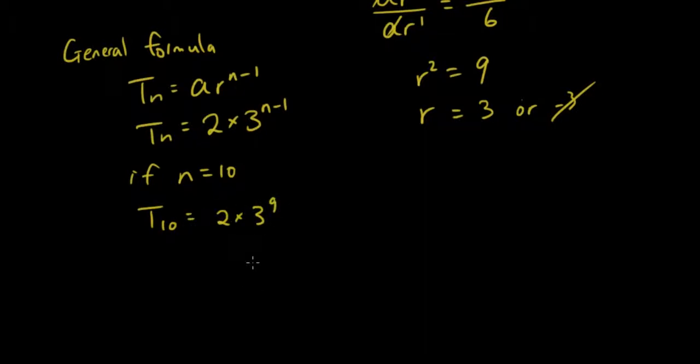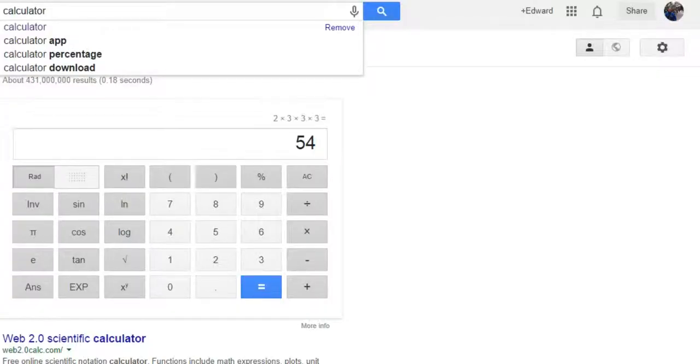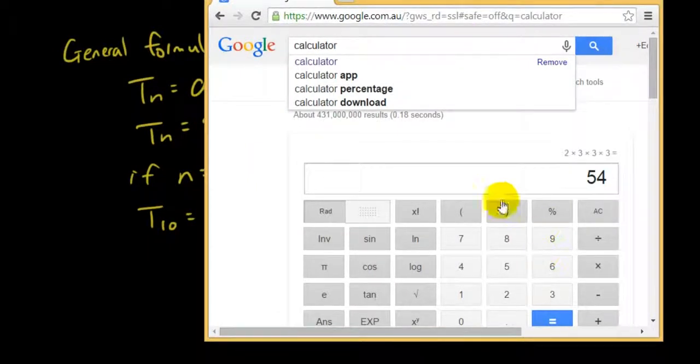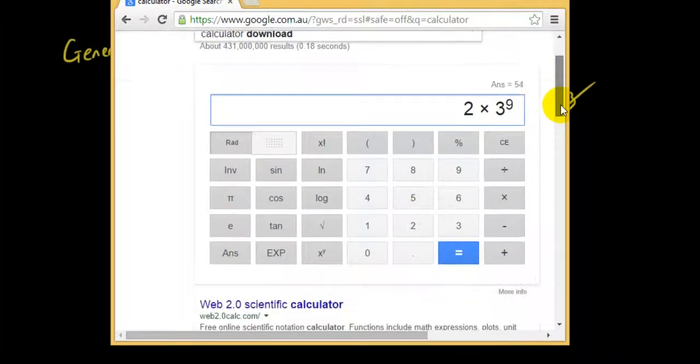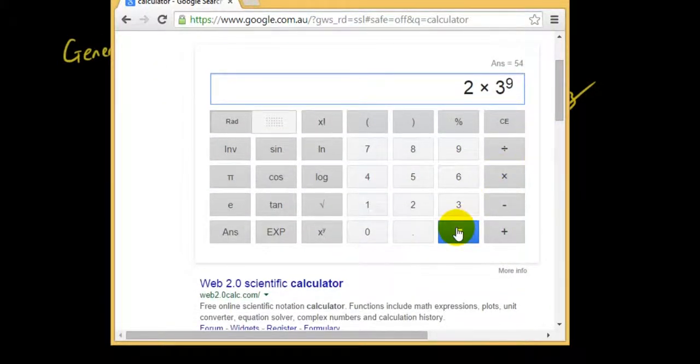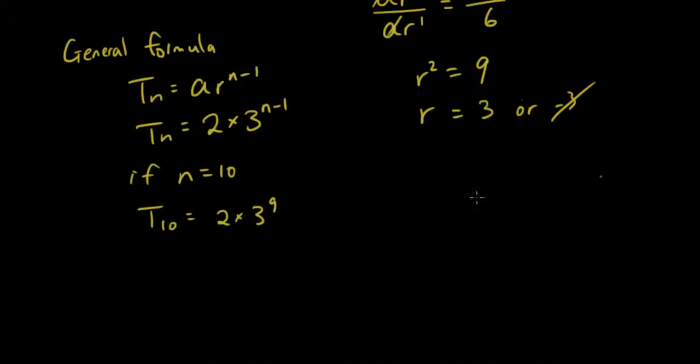Let's just use the calculator because that will be a bit quicker. So 2 times 3 to the power of 9. Is that it? Yup. 2 times 3 to the power of 9. The answer is 39,366. That is our final answer. I hope you got that.